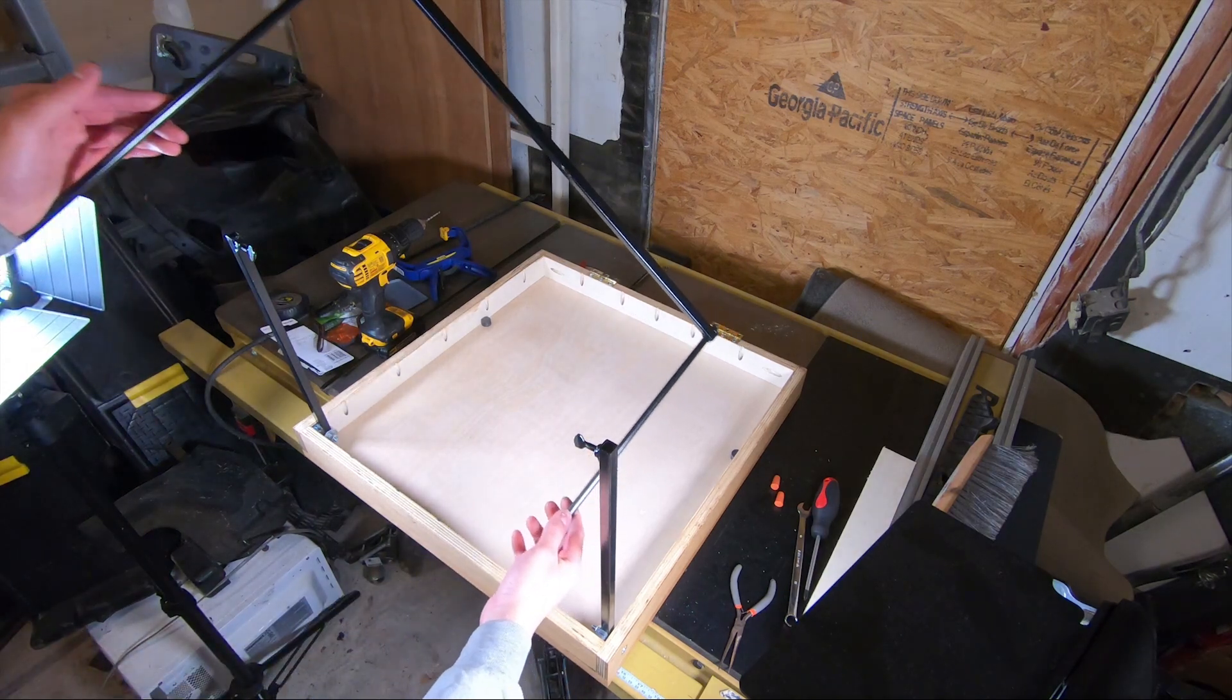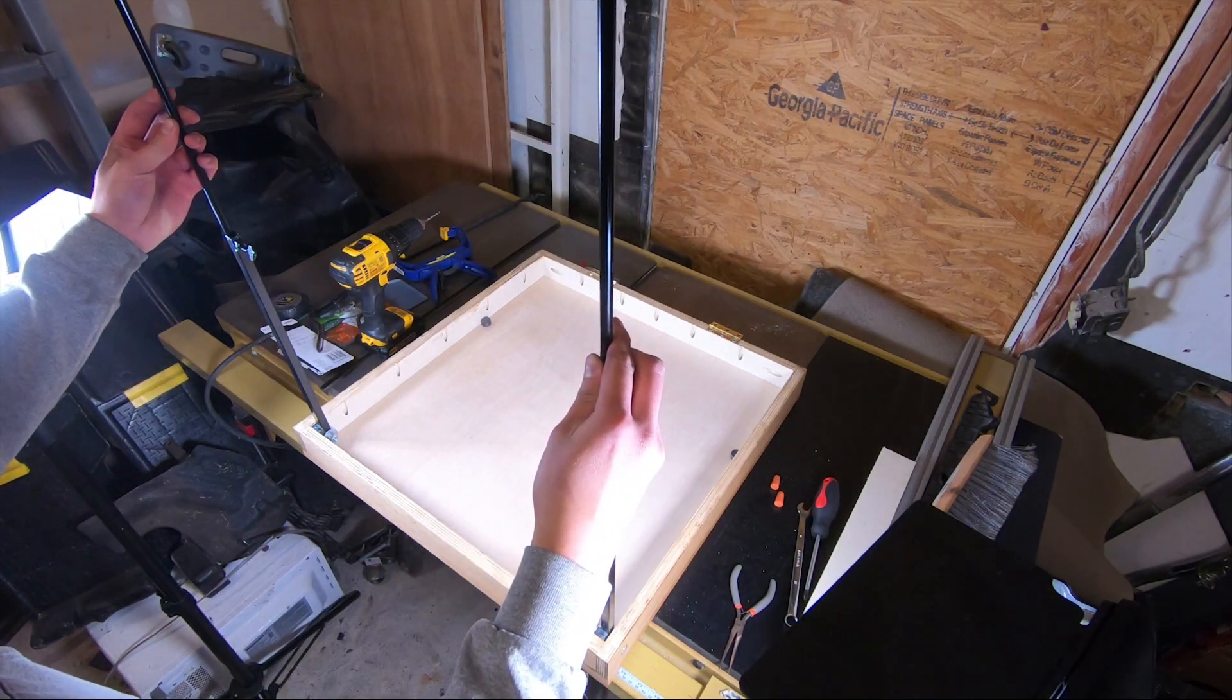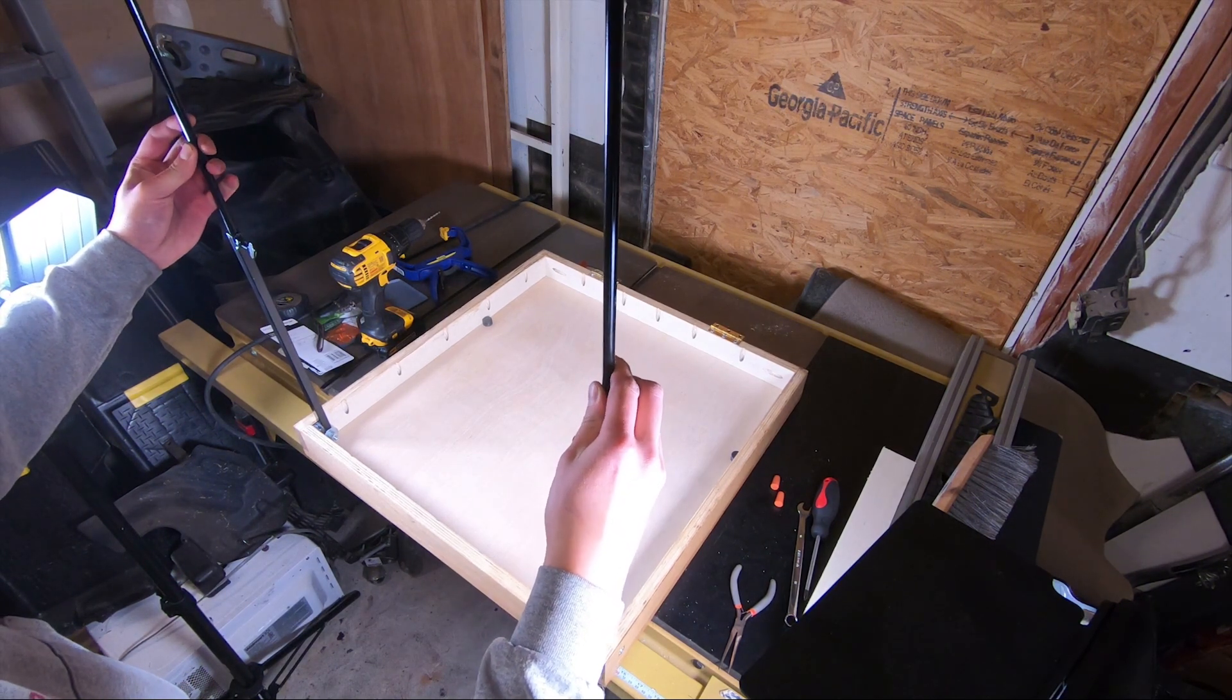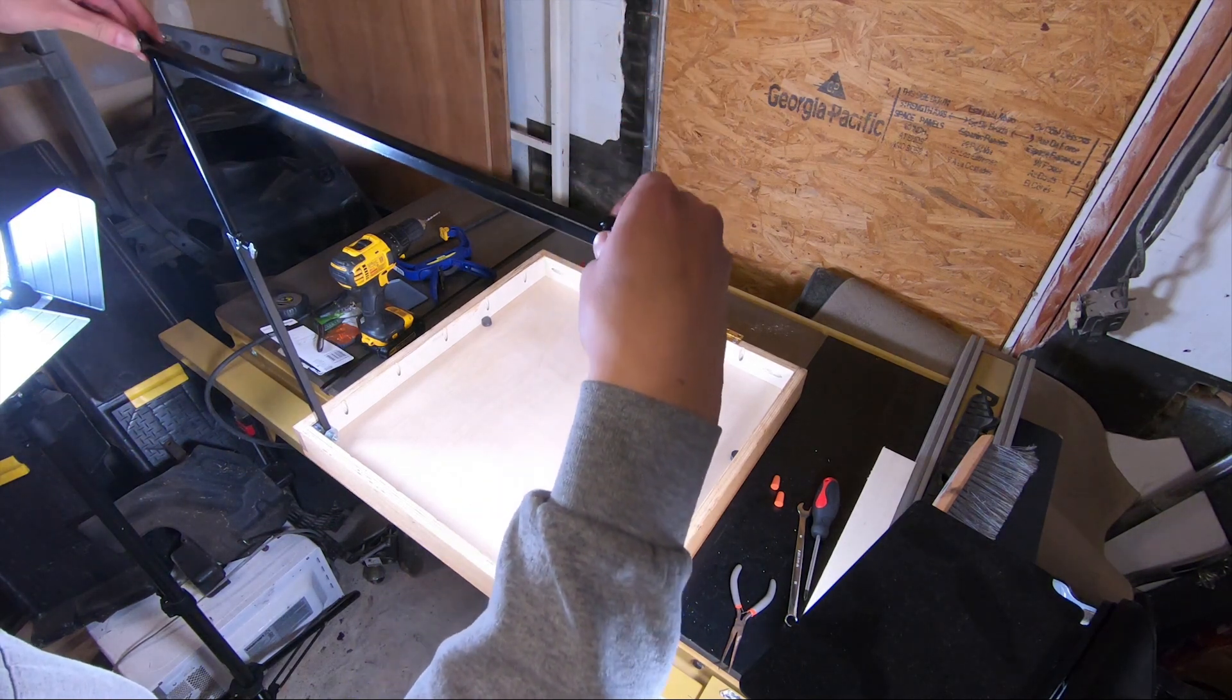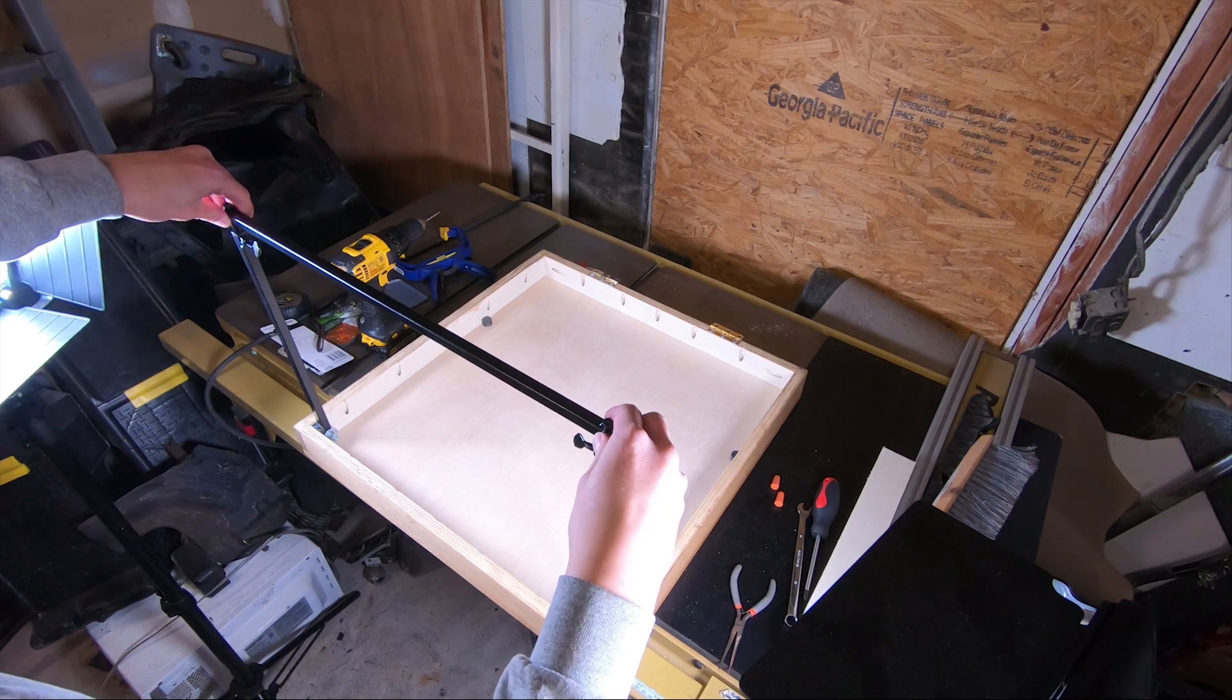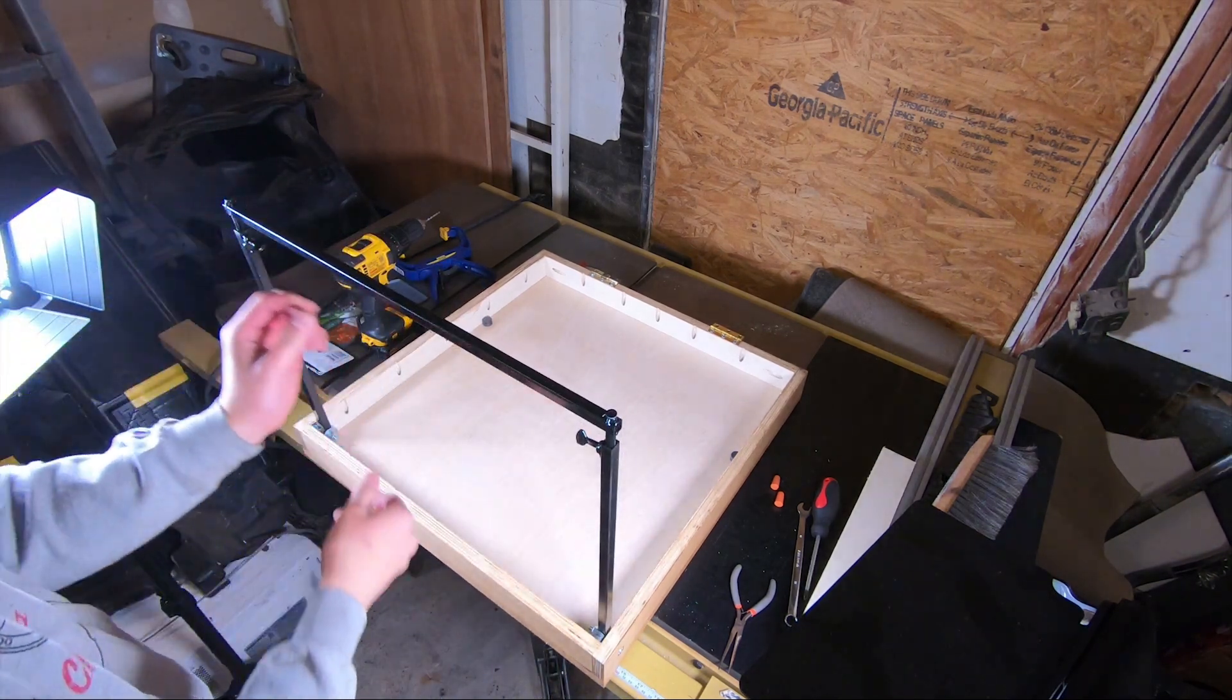Fold the legs up and loosen the screws until they're no longer in the square tube channel. Then you can insert the lower leg assembly. I don't recommend using any sort of lubricating fluid as the thumb screw is a friction lock so you don't want to interfere with that. Now you can tighten the thumb screws and fold the whole assembly back down.